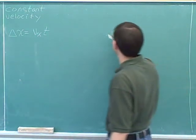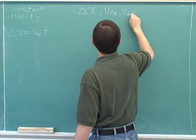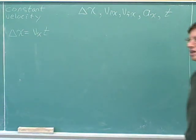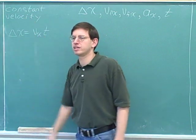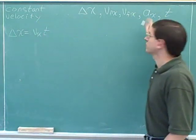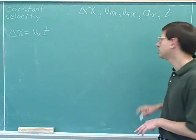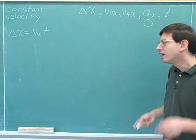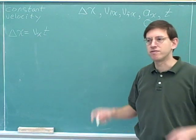Our standard kinematics variables are displacement, initial velocity, final velocity, acceleration, and time. Now, what happens to these variables when dealing with constant velocity? The acceleration is going to be zero. When your velocity is constant, the acceleration is zero — that's a very important relationship. The acceleration tells you how the velocity is changing: if acceleration is zero, we're neither speeding up nor slowing down, which means constant velocity.